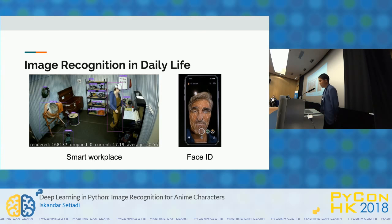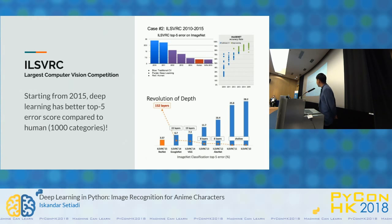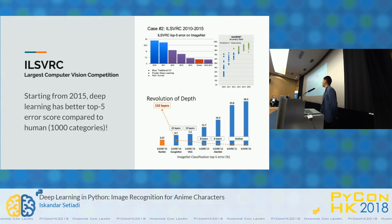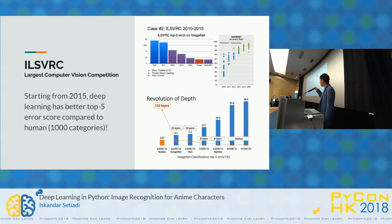The next topic is about ILSVRC, one of the largest computer vision competitions. The interesting part: starting from 2015, deep learning achieved a better top-five error score compared to humans. Around 2015, they tried to compare human performance at categorizing objects to a deep learning algorithm, and deep learning surpassed human accuracy in classifying objects.